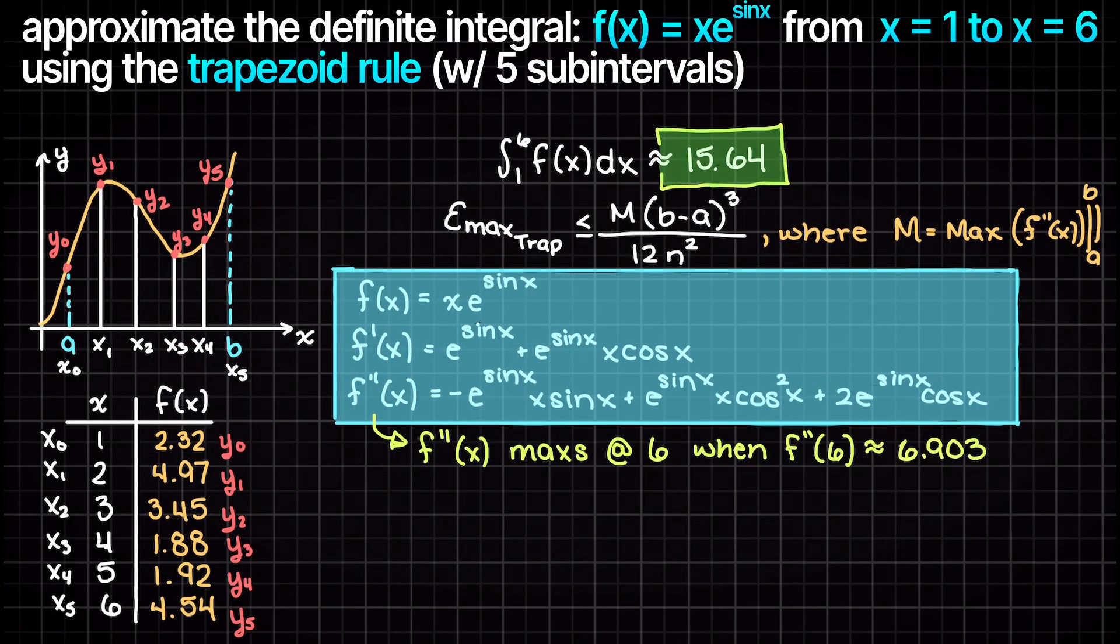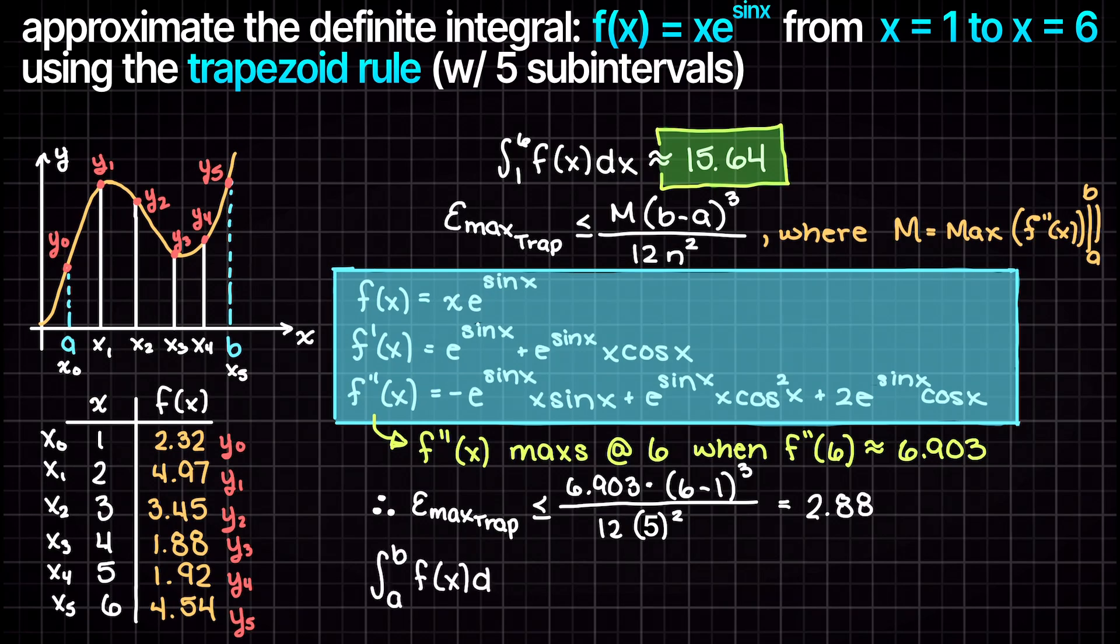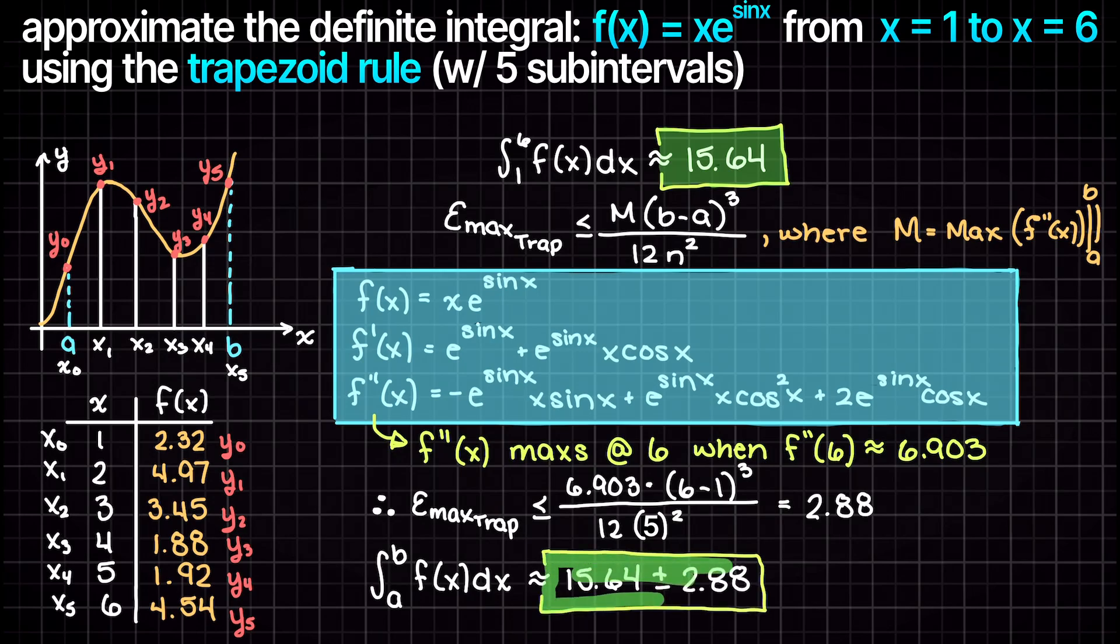Plugging all this information into our error formula, we get that with our current step size, the maximum error is 2.88. Therefore we can say that this approximate definite integral of x e to the power of sin x between the bounds of 1 and 6 is 15.64 plus or minus 2.88.